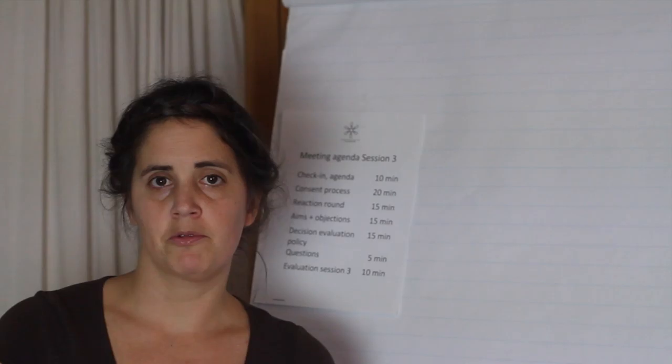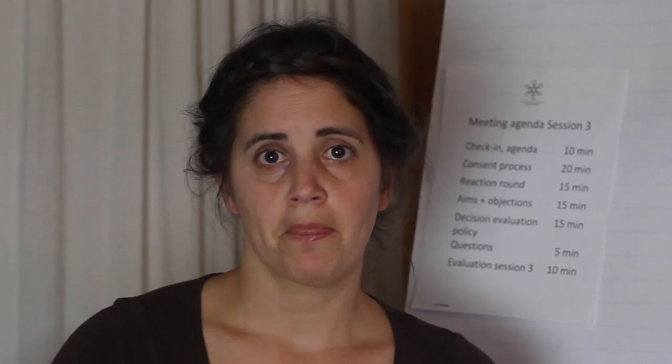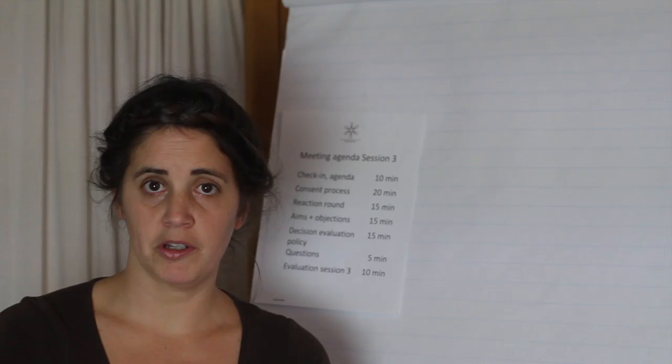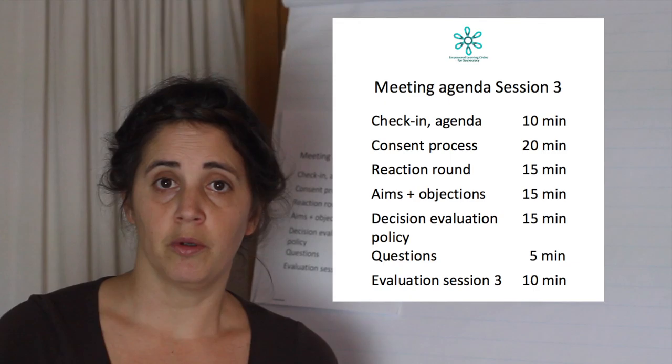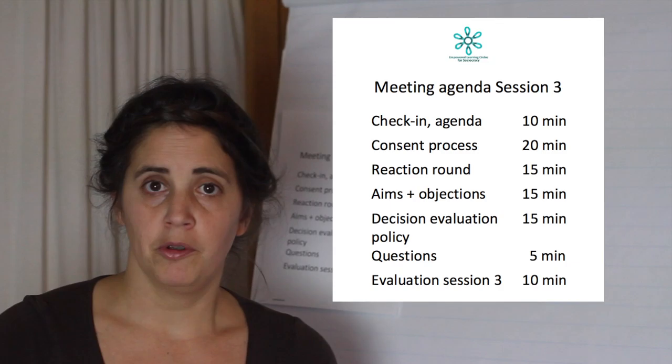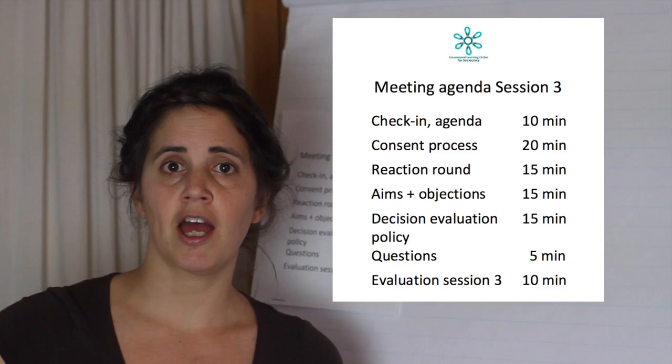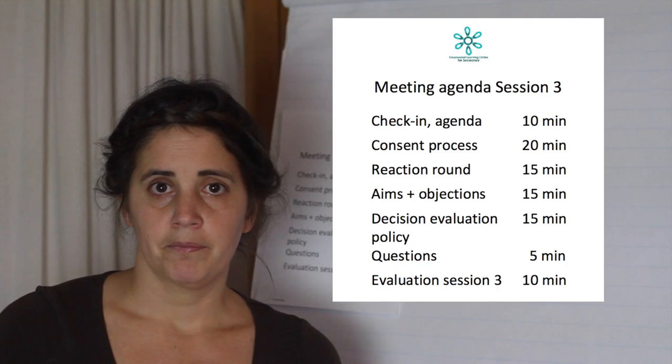So what is an objection? How do we know what is a valid objection and what isn't? An objection is when you have a concern that a proposal might be in conflict with the circle's aim. That means we have to talk about aims now. Aims are what the circle is actually doing — their actual work.